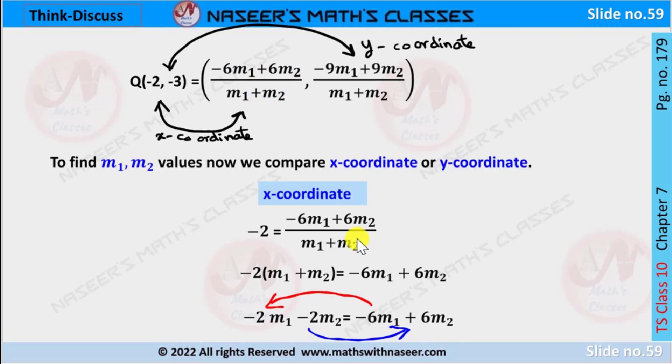Now we transpose m₁ + m₂ from denominator to the LHS. Then we can write it as -2(m₁ + m₂) equals -6m₁ + 6m₂. By using distributive law.